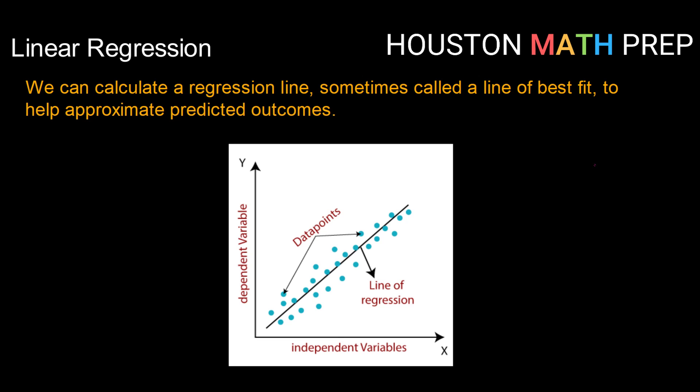So one thing that we can do with a linear relationship and with linear regression is we can calculate what's called a regression line, or sometimes called a line of best fit. So that is a linear equation that runs through the data points. It is calculated by technology so that it fits the data as best as possible. And that is done by trying to minimize what is called a residual. So a residual is the difference between the point on the line for a given x value and the data value for that x value.